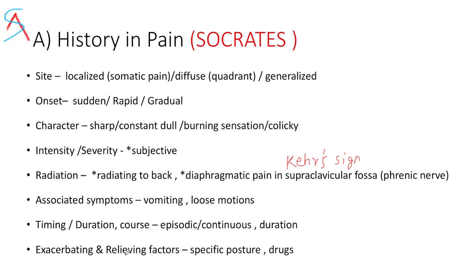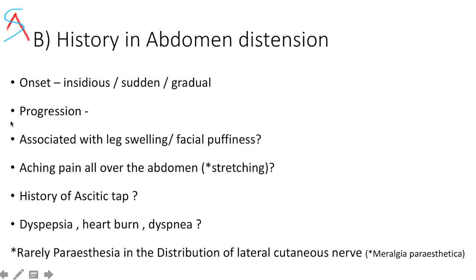For abdominal distension, ask about onset — insidious, sudden, or gradual — and progression. Ask if associated with leg swelling or facial puffiness. With ascites, abdominal distension causes stretching, resulting in aching pain all over the abdomen. Ask about any history of ascitic tap. Abdominal distension can cause dyspepsia, heartburn due to GERD, and dyspnea — the patient may have orthopnea due to tense ascites. Rarely, paresthesia in the distribution of the lateral cutaneous nerve can occur, known as meralgia paresthetica, which is very rare.